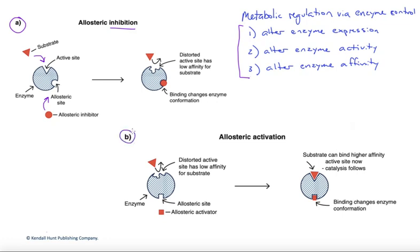In the opposite scenario, over here in B, the active site starts out as a little bit distorted, and we would have a relatively low affinity and low activity. In this case, binding of the allosteric modulator to its site again changes the protein structure, but in this scenario provides an active site that is more likely to bind the substrate and process it, increasing its output over time.